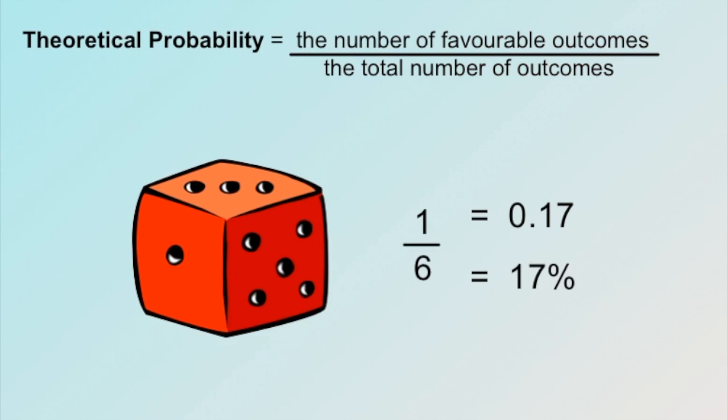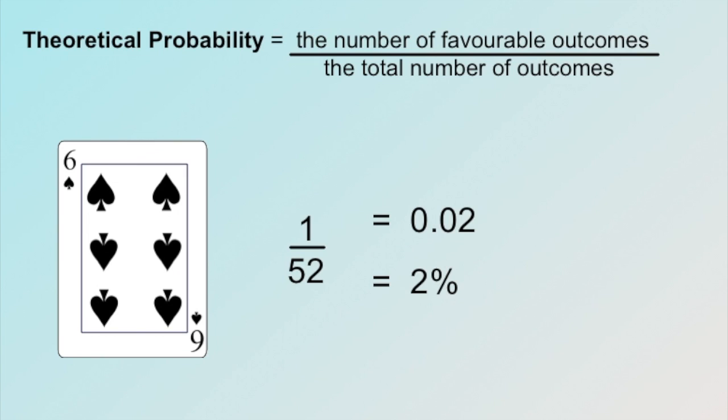With a die, there are a total of six possible outcomes. That means that each of the six numbers on the die have one in six chances of being rolled. And in a 52-card deck, each card, like the six of spades here, has one in 52 chances of being selected if the cards are properly shuffled. There's only one six of spades, and there are 52 cards in total.